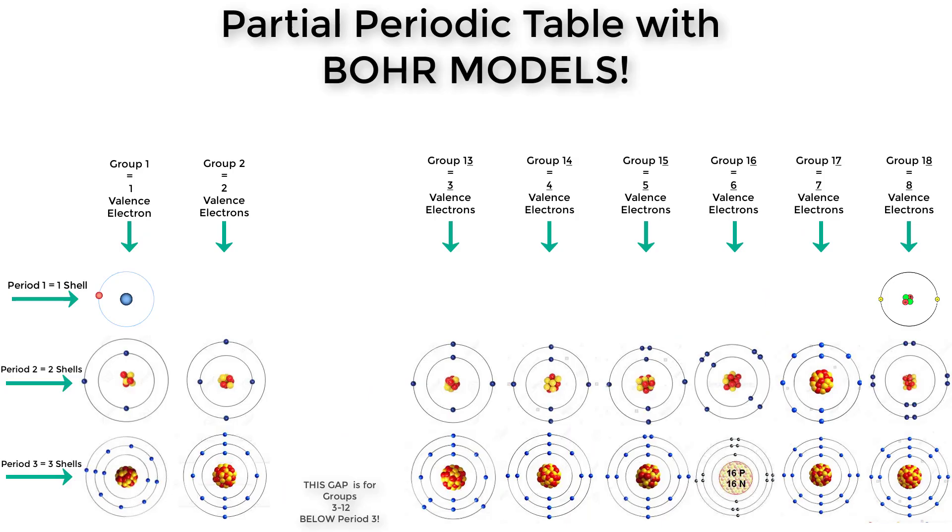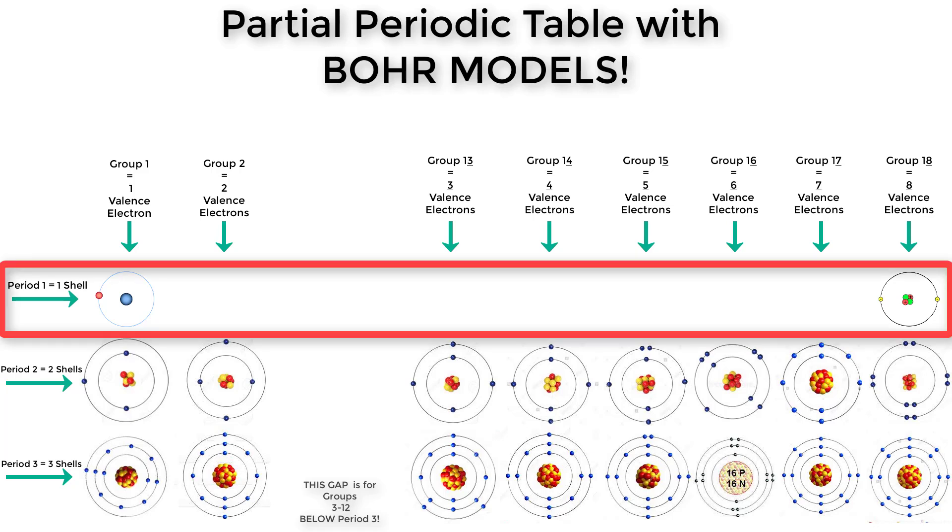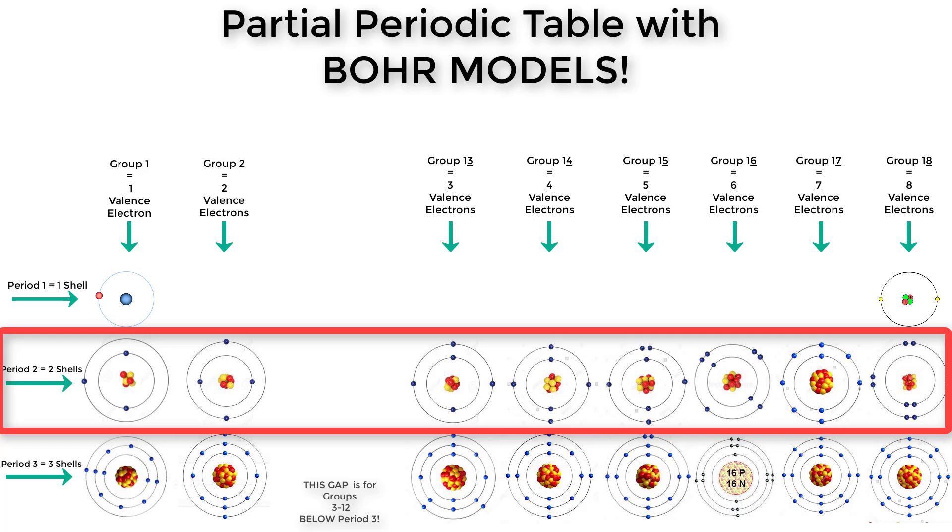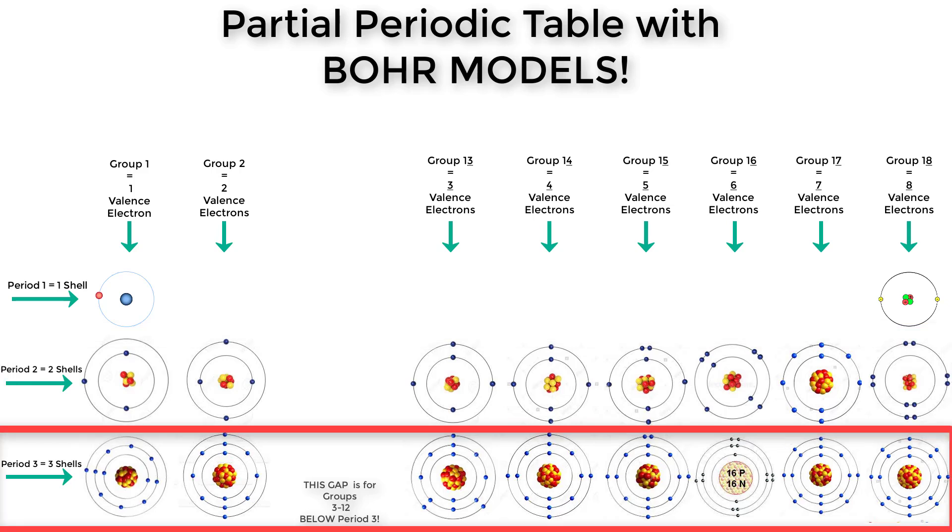Here's a portion of a periodic table with the atoms subbed in for the element names. Do you see how the rows and columns work now? Row one has only one electron shell. Row two has two. And every element in row three has three electron shells.